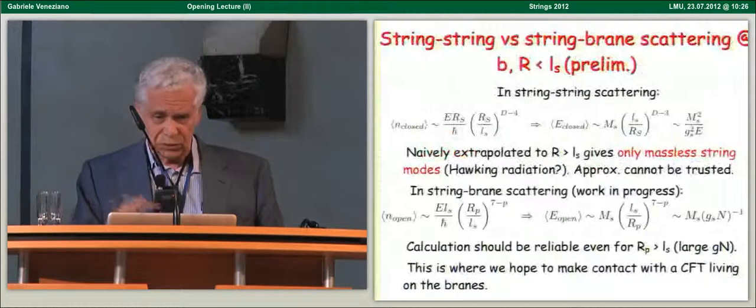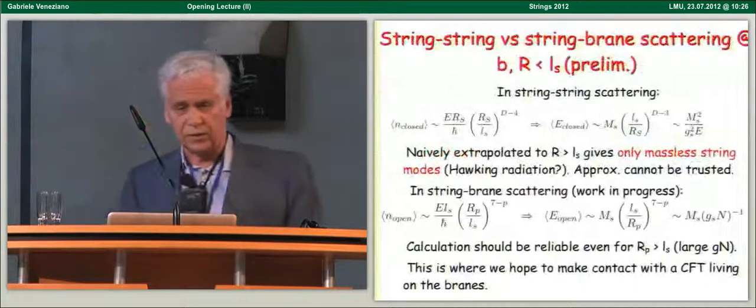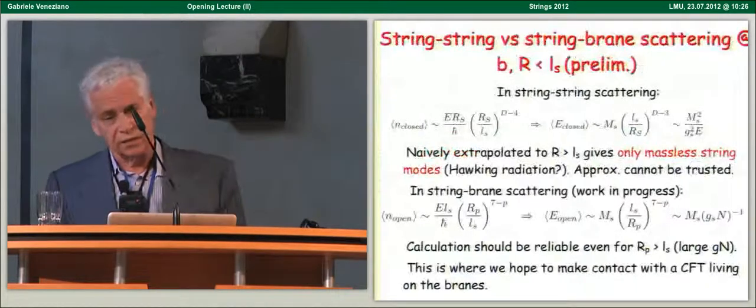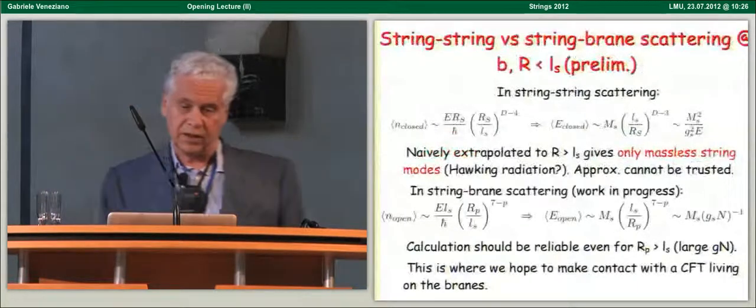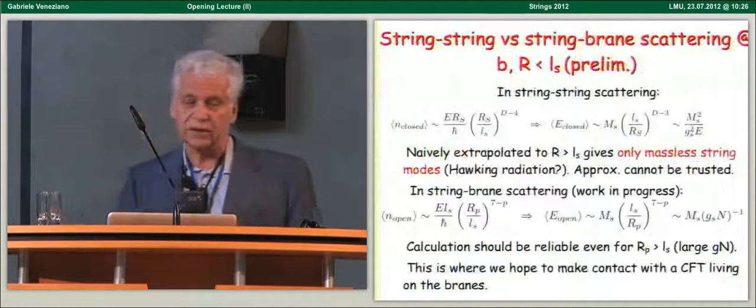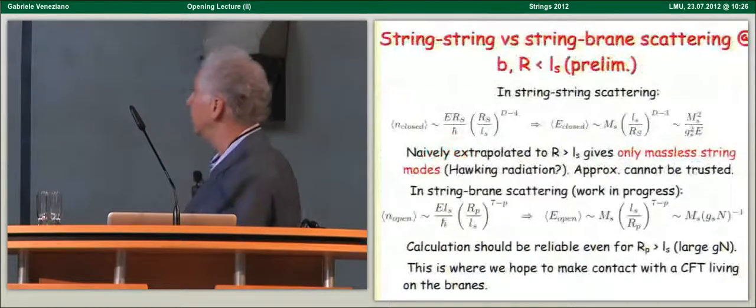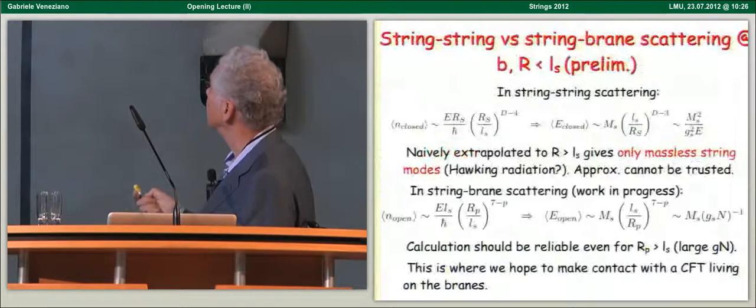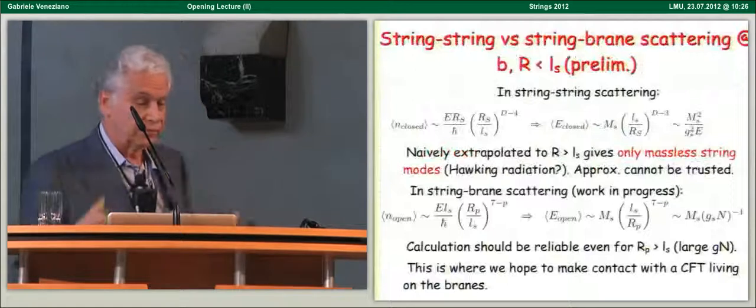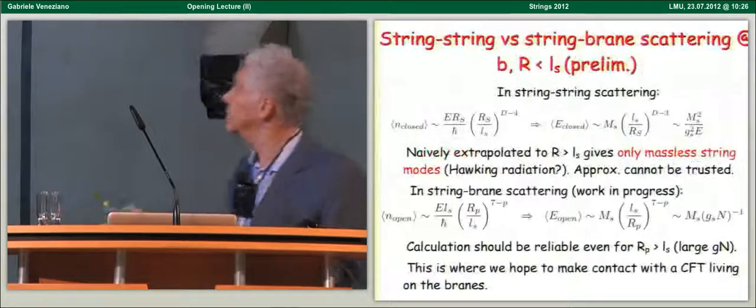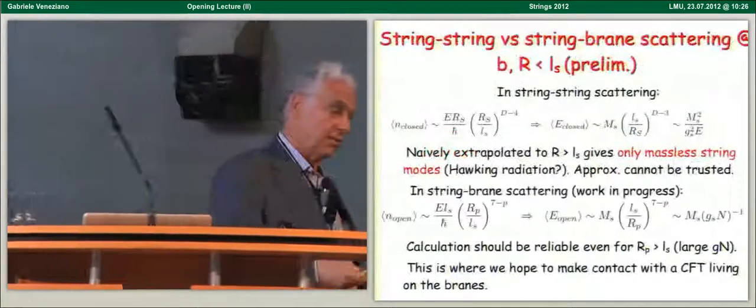And the last transparency, I want to say preliminary results about what we expect and how we can compare string-string and string-brane scattering when we go to this interesting regime in which impact parameter and Schwarzschild radius, the geometry radius, are smaller than the string scale. Now, as I said already, in the string-string collision case, we find a fast growth of the number of closed-produced strings. You see, this goes like E squared because the Schwarzschild radius to the power d minus three is an R power of E.